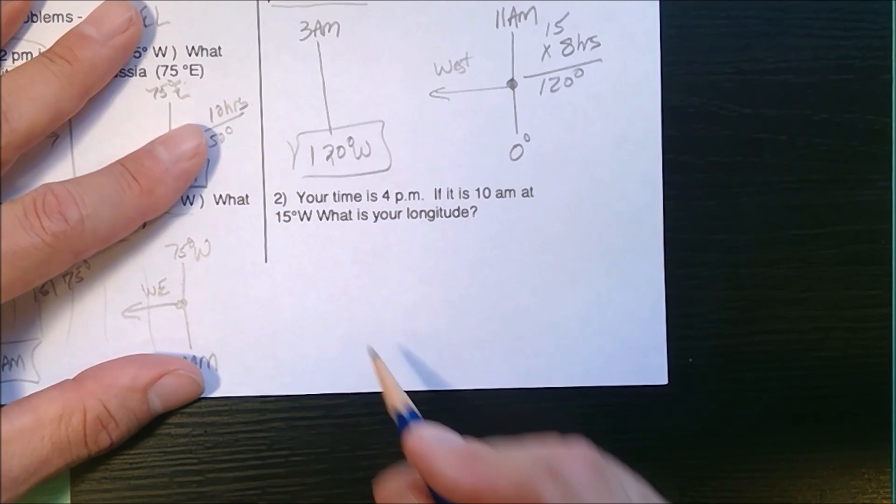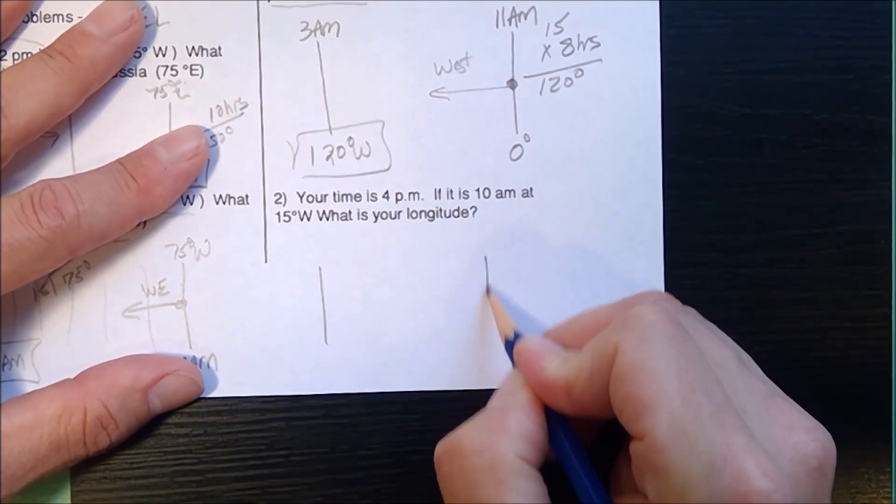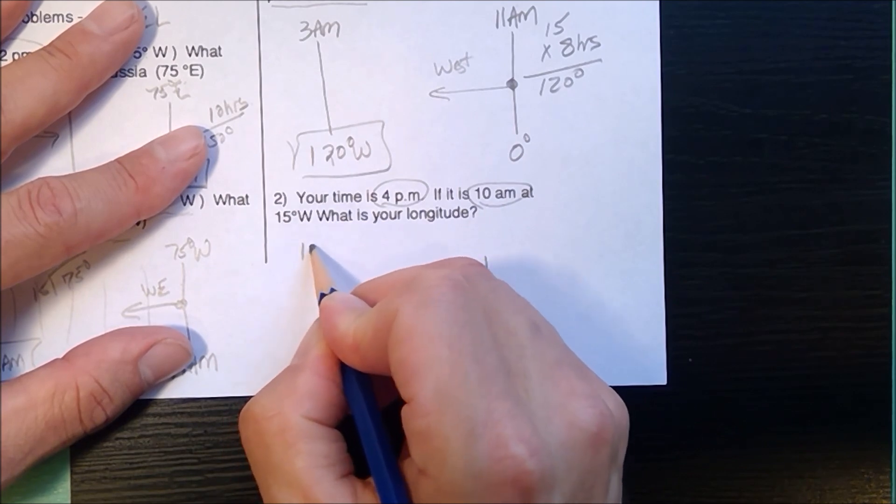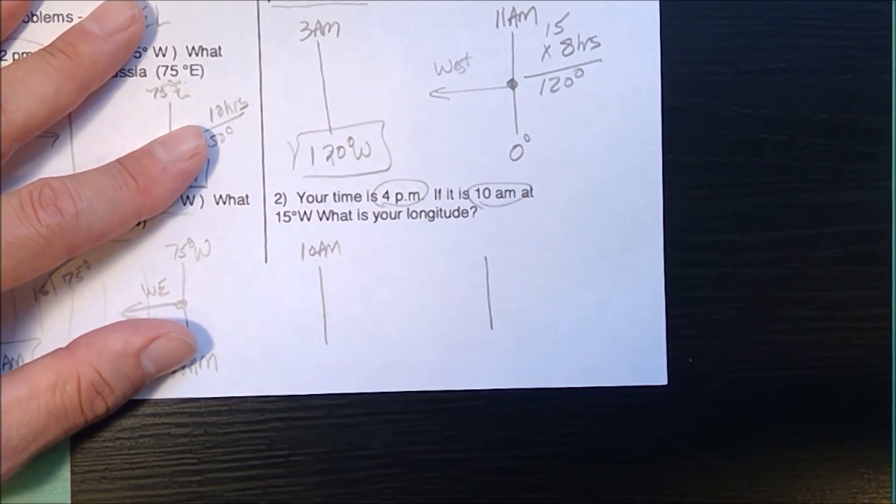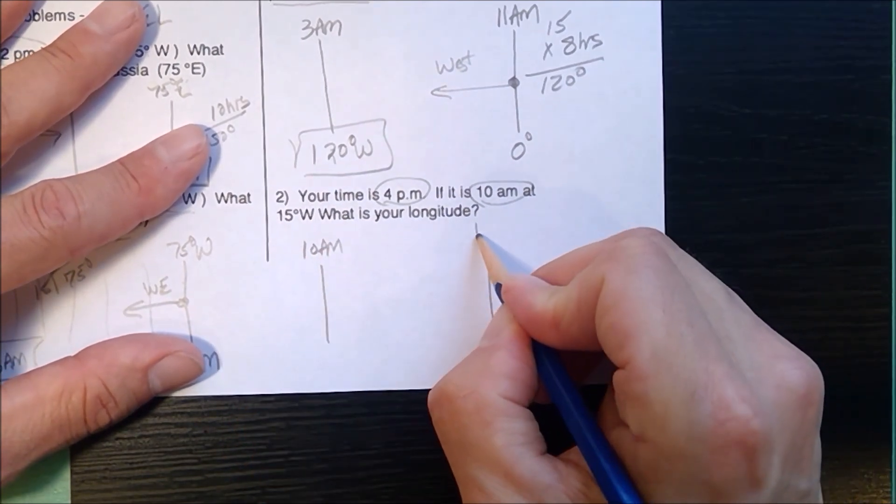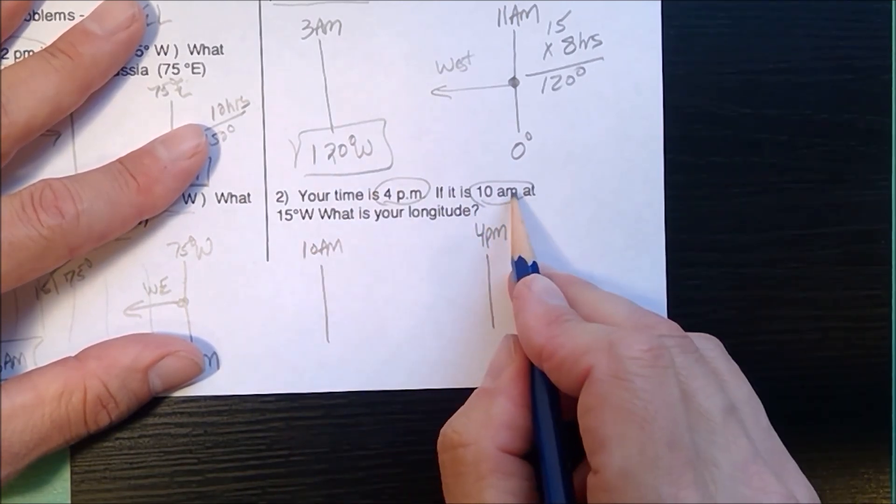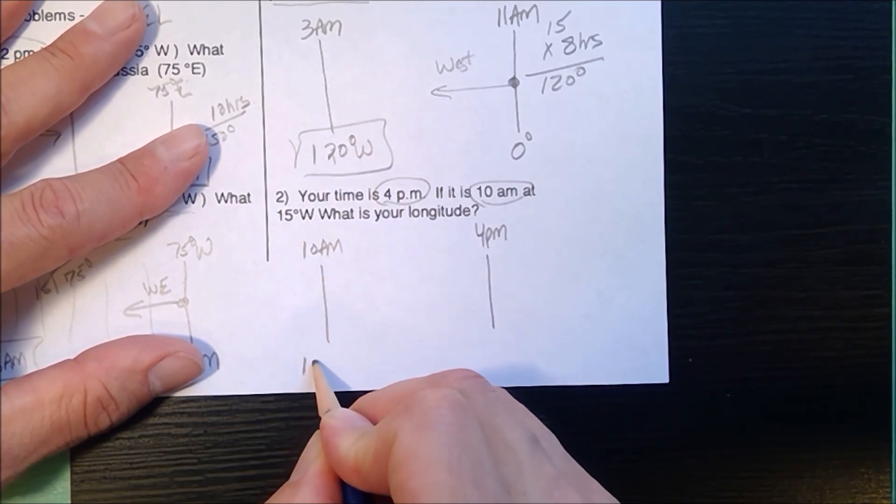Now, the most complicated one of all. Two meridians: 4 p.m., 10 a.m. 10 a.m. is going to be earlier - west is earlier. 4 p.m. is later. We know it's 10 a.m. at 15 degrees west.